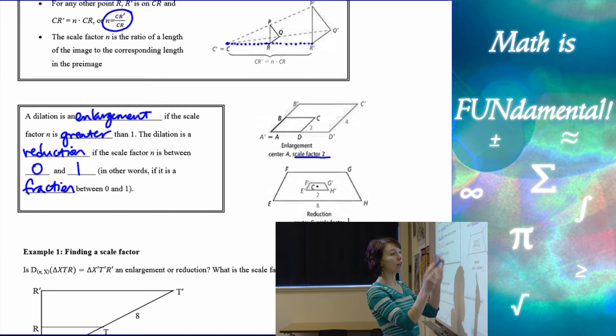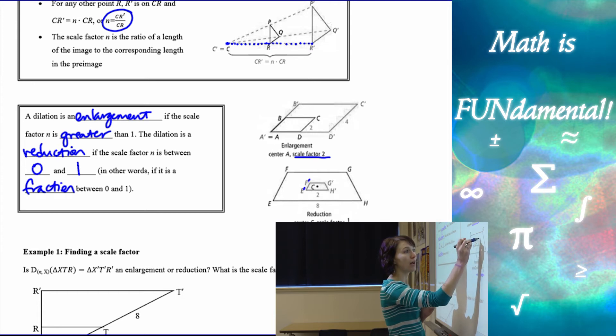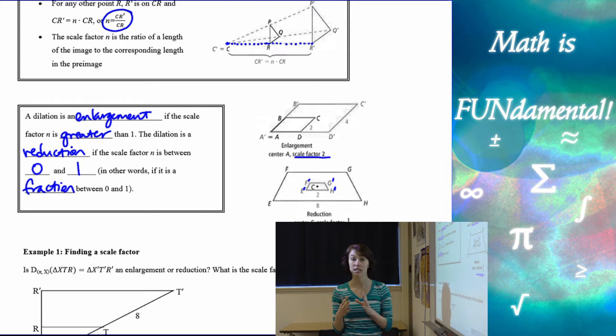Again, we want to look at our image points. So here you can see the little primes next to each one. That means that's our resulting figure. That's our image. The other is our pre-image, so we got smaller by a factor of 1 fourth.